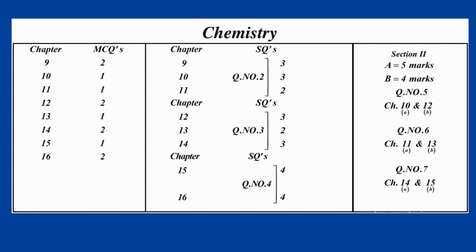After MCQs, there will be short questions. There will be 3 sections of short questions. Each section will have 8 parts and you will attempt 5 of them. Chapter 9 has 3 questions, Chapter 10 has 3 questions, and Chapter 11 has 2 questions — making a total of 8 questions in that portion, from which you will attempt 5.